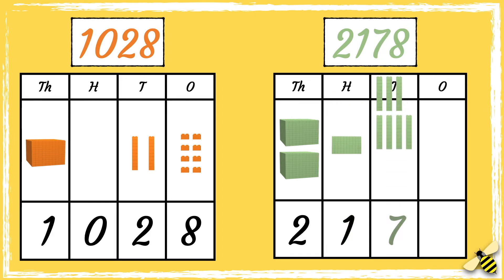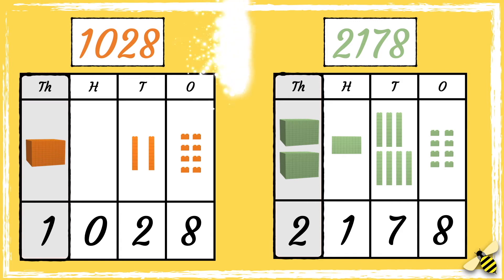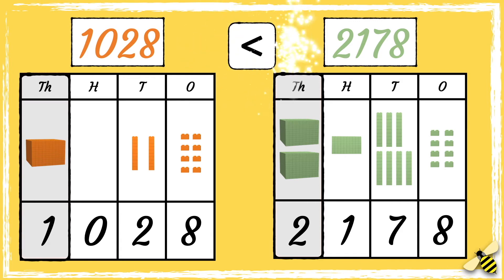The number 2178 has two thousands, it has one hundred, it has seven tens and it has eight ones. When we compare numbers we look at the thousands digits first. The orange number has one thousand and the green number has two thousands, so we can see that 1028 is less than 2178.